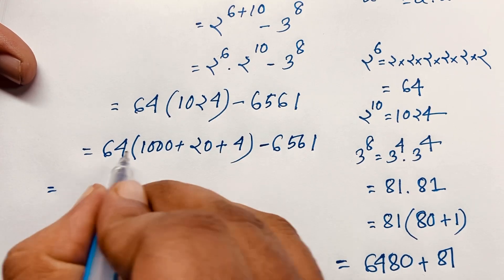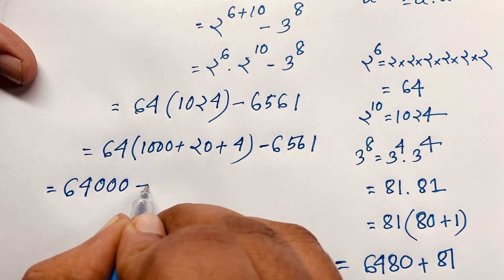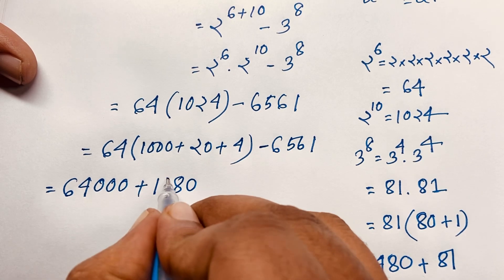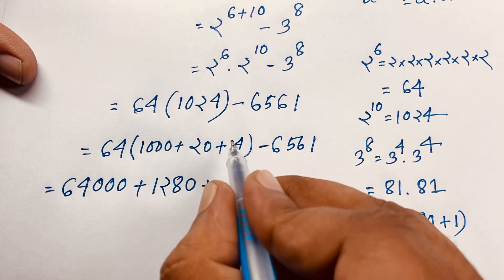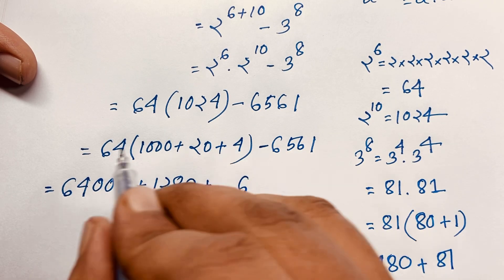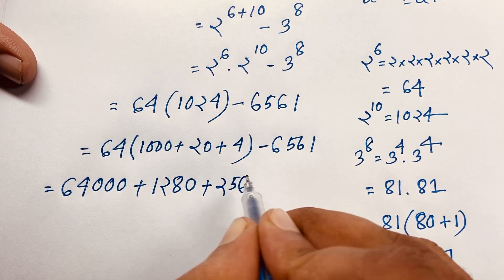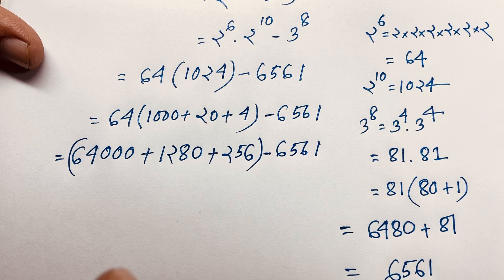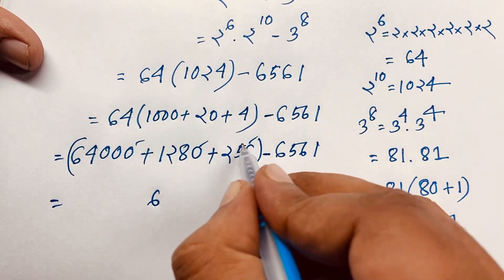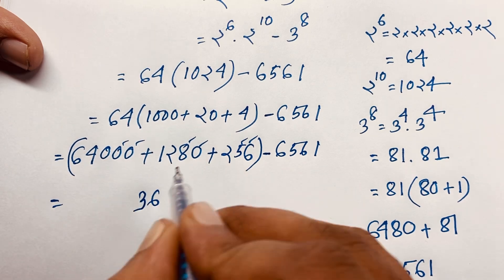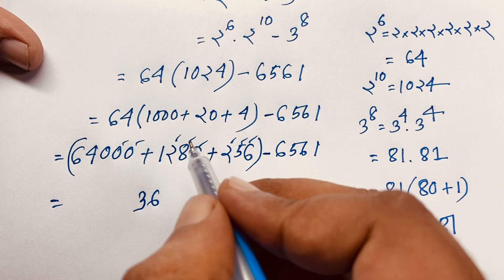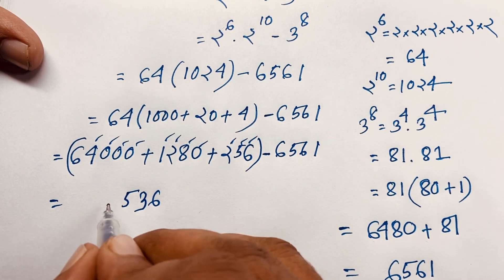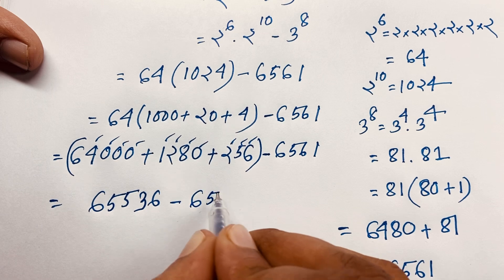Now, 64 times 1024: we can write 1024 as 1000 plus 20 plus 4. So 64 times 1000 is 64000, 64 times 20 is 1280, and 64 times 4 is 256. Adding: 64000 plus 1280 plus 256 gives us 65536. So 64 times 1024 equals 65536, minus 6561.